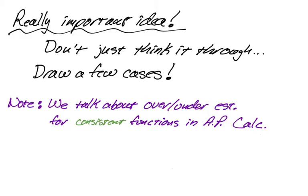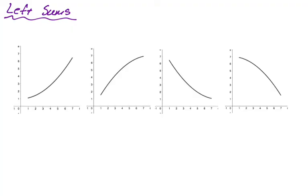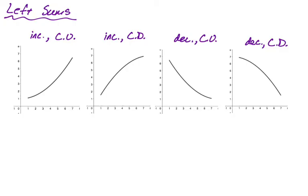Let's take a look at what we're dealing with. For left sums, I have four different graphs. We have increasing and concave up, then increasing and concave down — those are the two possibilities there. Then we have decreasing but concave up, and then decreasing and concave down. These are the cases you would have to deal with. So if you're unsure, just draw all four of these and draw your sum, and you will know what's going to happen.